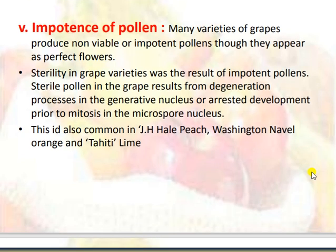Many varieties of grapes produce non-viable or impotent pollen, though they appear to have perfect flowers. Sterility in grape varieties is a result of impotent pollen. Sterile pollen in grapes results from degeneration processes in the generative nucleus or arrested development prior to mitosis in the microspore nucleus. This is also common in J.H. Hale peach, Washington Navel orange, and Tahiti lime.